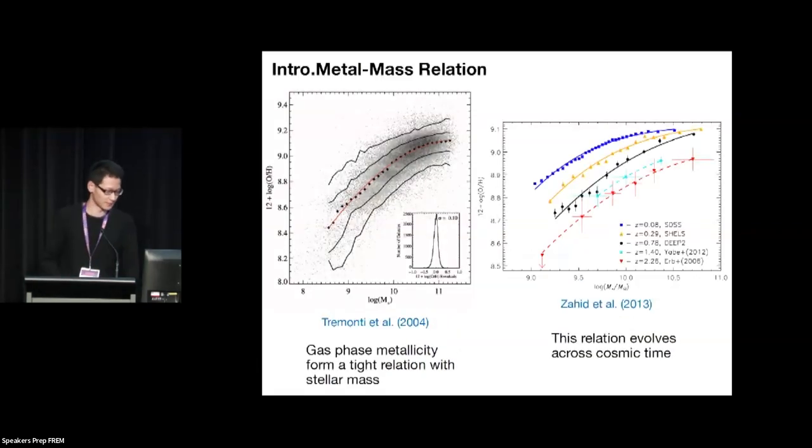Let's start from the well-known relationship in local star-forming galaxies. In local star-forming galaxies, they find that there is a tight relationship between the metallicity and the stellar mass. This relation is very tight - the scatter is only about 0.1 dex.